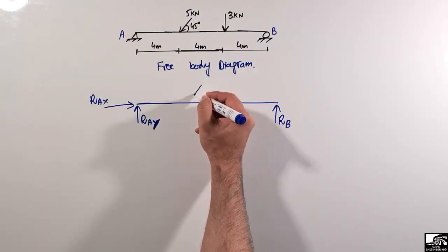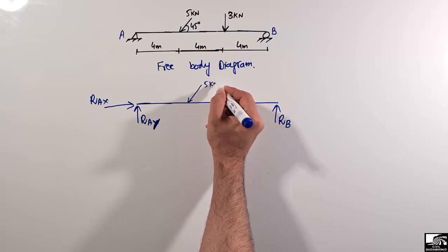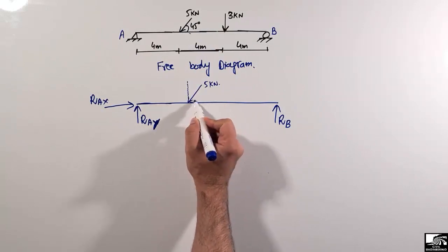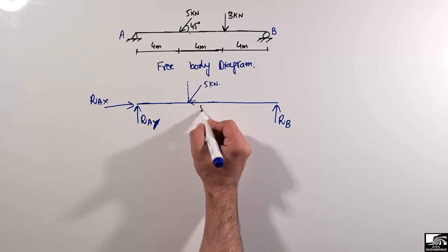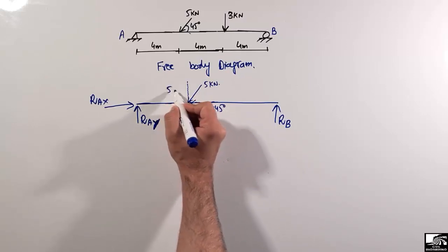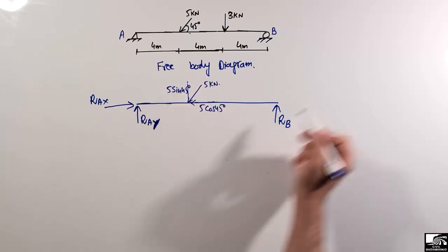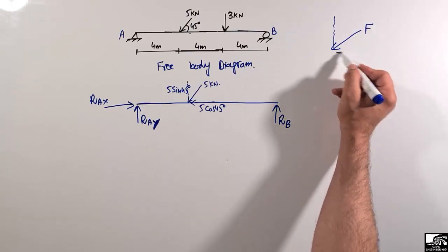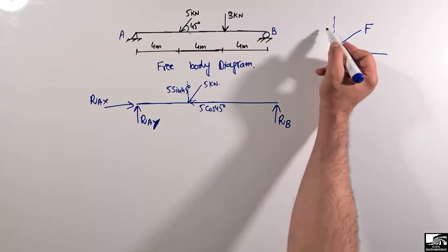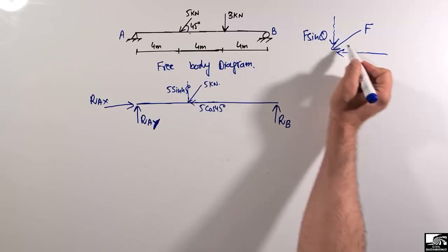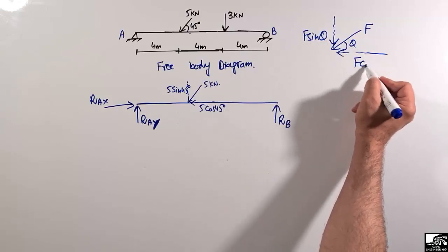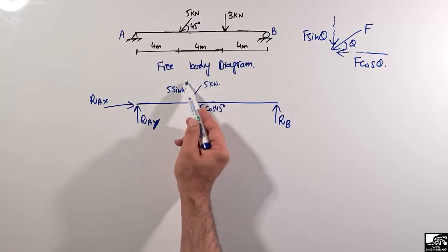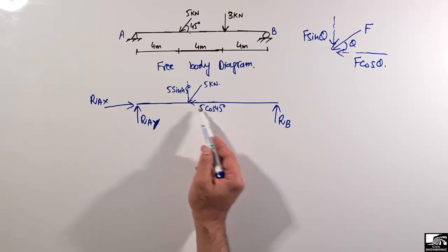There is a load of 5 kilonewton acting at an angle of 45 degrees — it is an inclined load, so it has two components: a horizontal component of 5·cos(θ) and a vertical component of 5·sin(θ). For any inclined force F at angle θ, the horizontal component is F·cos(θ) and the vertical is F·sin(θ).